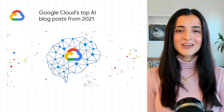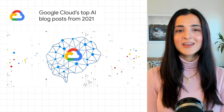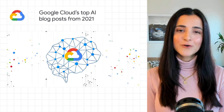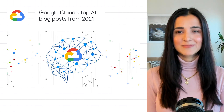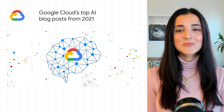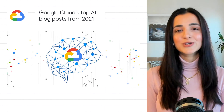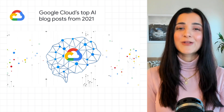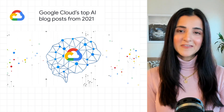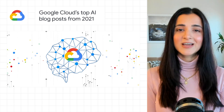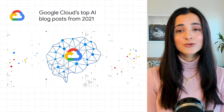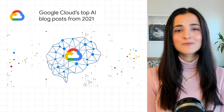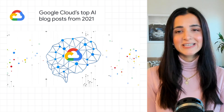In 2021, Google Cloud launched a variety of new solutions, research, products and tutorials focused on AI and machine learning. Don't fret if you missed out, because we've collected some of our top 2021 AI blog posts to help you kick off 2022 on the right foot. Click on the links below to learn about the biggest announcements around Google Cloud's Vertex AI, a managed machine learning platform for building, deploying and maintaining ML models.